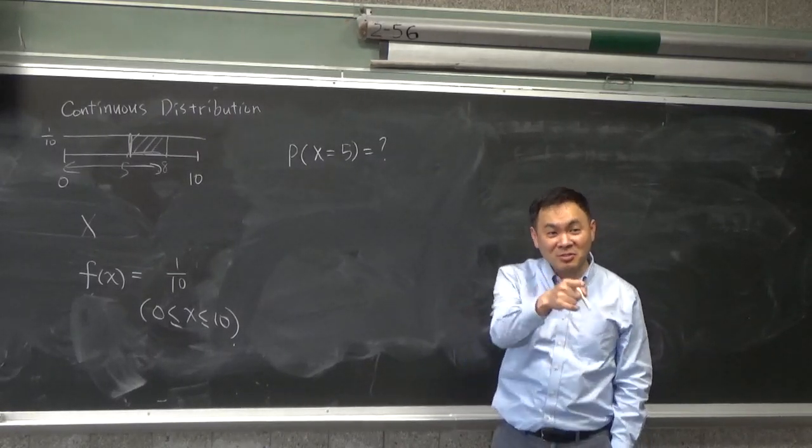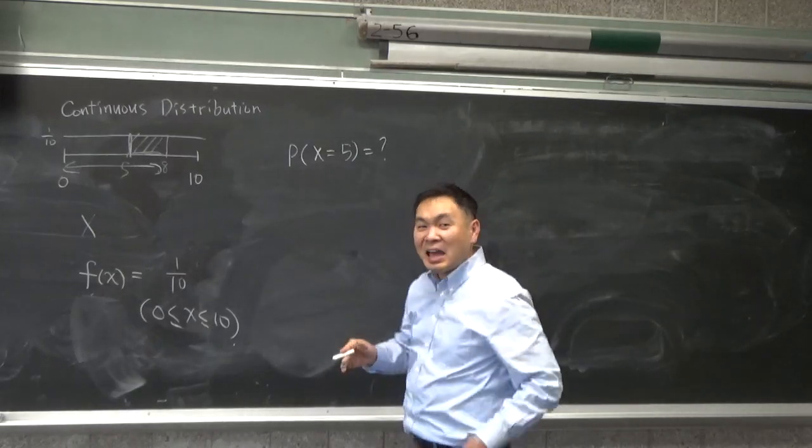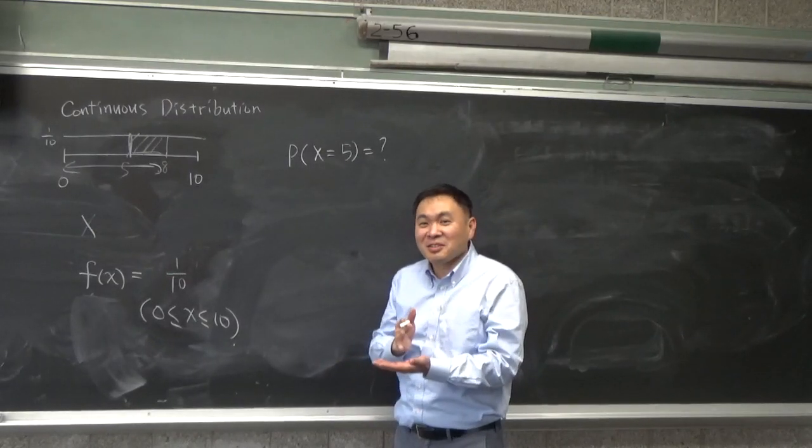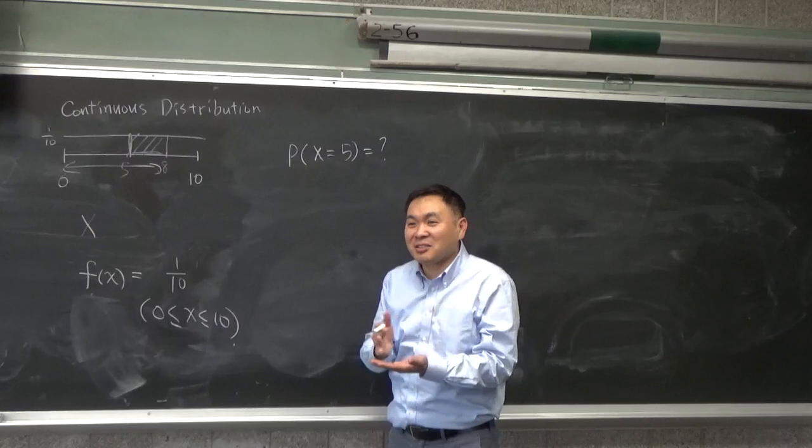It'll be 0. It'll be 0, why? Because at that exact point... at exact point. Yeah, you can't have that in a continuous distribution, right?